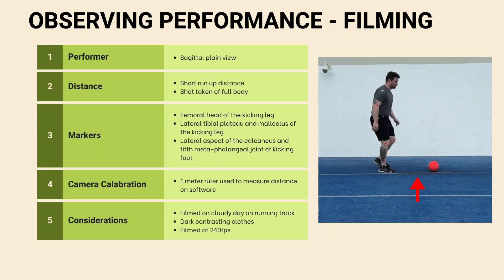When observing performance while filming, the performer stood in the sagittal plane for the most accurate view. Markers were placed on the femoral head of the kicking leg, lateral tibial plateau and malleolus of the kicking leg, lateral aspect of the calcaneus, and fifth metatarsophalangeal joint of the kicking foot. A meter ruler was used for calibration, placed directly next to where the participant was kicking. The session was filmed on a cloudy day on a running track, with the participant wearing dark clothes, at a frame rate of 240 frames per second — well above what is recommended in the literature.